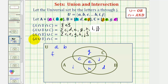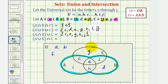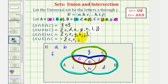Finally, we have A union B intersection C. Let's first determine A union B — all the elements that are in A or B. Then we want all those elements intersected with C. The intersection of these two sets gives us the elements in this region. Therefore this set contains C, E, and J. Okay, I hope you found this helpful.